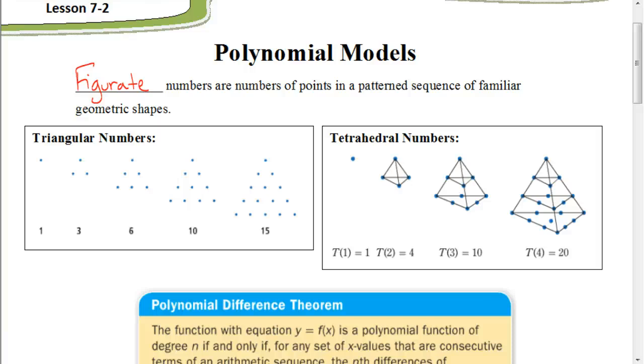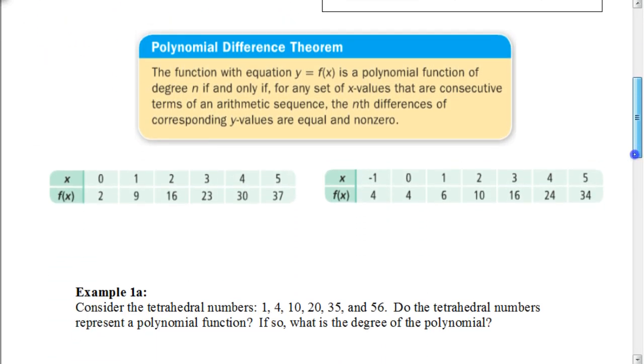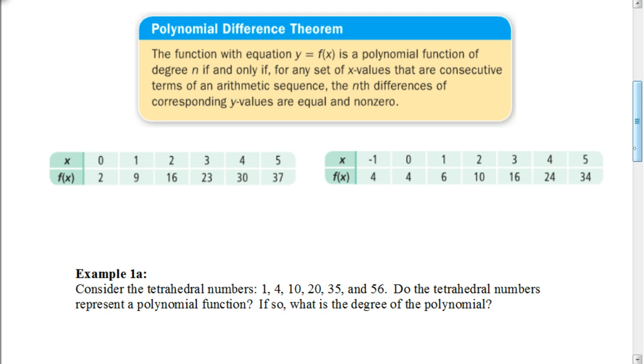Now, we can determine if these sequences follow a pattern for a polynomial and the degree of that polynomial by using what's called the polynomial difference theorem. Now, what's in that box is much more complicated than it actually is. It's much easier just to show you, but basically, the polynomial difference theorem finds the difference in the numbers in a sequence, and you continue finding those differences in the sequence until you find a row where we have the same or common difference. And the number of differences it takes to get to that point is the degree of the polynomial. And if you get caught in a loop where you can't find the constant difference, that means it's not a polynomial that represents that sequence.